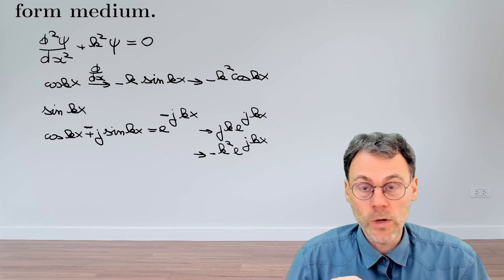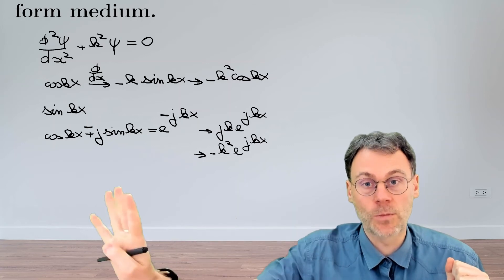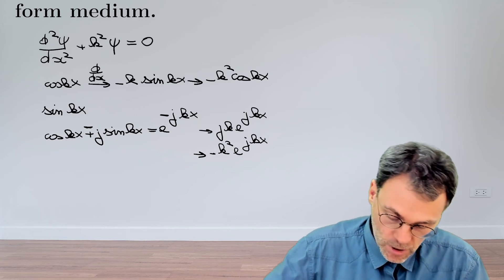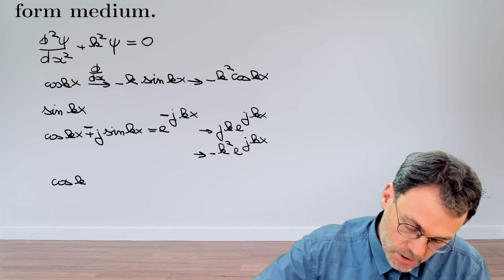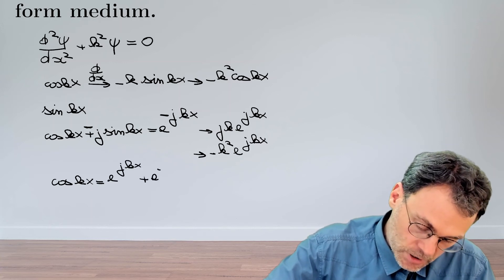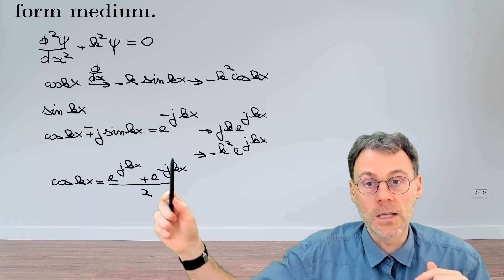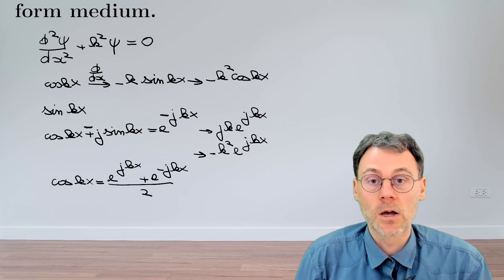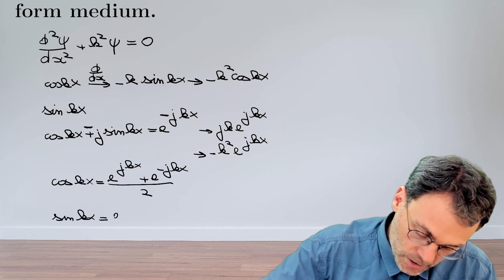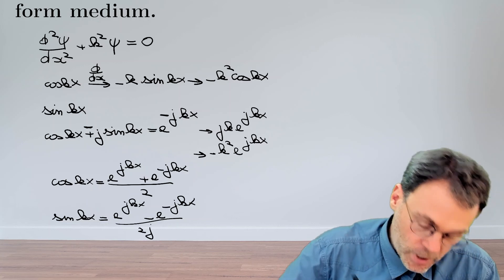If we look at the physics of the problem, the complex exponentials correspond to propagating plane waves — waves propagating either towards plus infinity or minus infinity. The cosines and sines correspond to standing waves, which you can verify because cosine kx can be written as exponential jkx plus exponential minus jkx divided by 2. So the cosine is a sum of two counter-propagating plane waves, which is exactly what a standing wave should be. The same holds for sine kx with slightly different pre-factors.